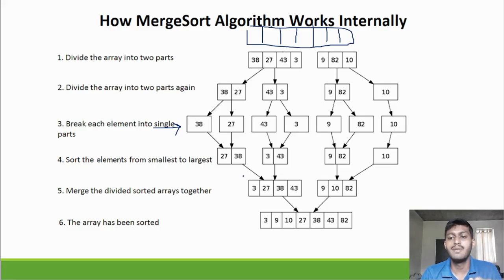You have to divide the array into two parts repeatedly. When you get a single element, break each element into a single part. When you get single parts, you sort the elements from smallest to largest. If you want ascending, you should sort from smallest to largest. If you want descending, largest to smallest. Merge divided sorted arrays together.